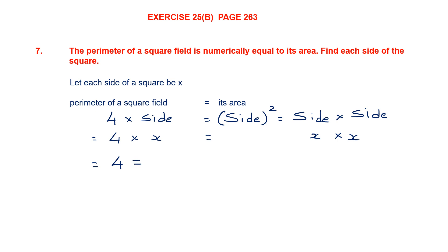On the right hand side we already have x into x. When I transpose this x to the right hand side, it will become division because here it is multiplication. So I will put that x there. Let me cancel whatever I can — I can cancel one x here and one x there. So what do I have now? I have x is equal to 4.